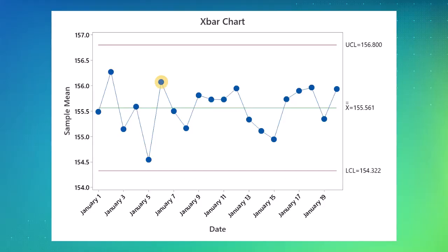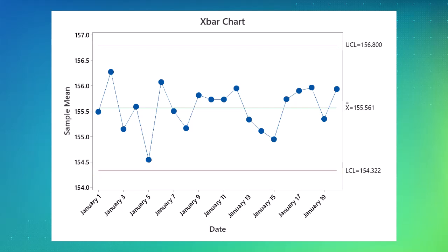Control charts plot your process data in time-ordered sequence. Most control charts include a center line, an upper control limit, and a lower control limit. The center line represents the process mean, and the control limits represent the process variation.